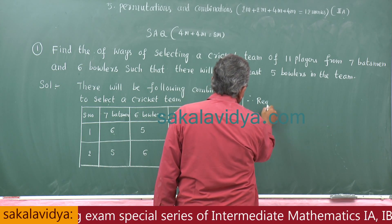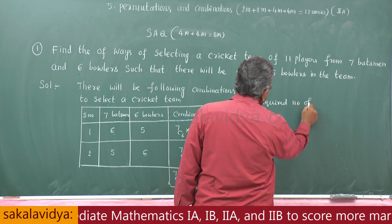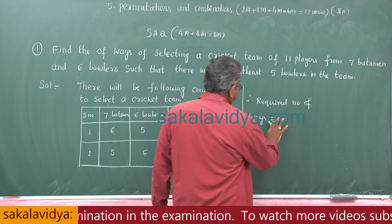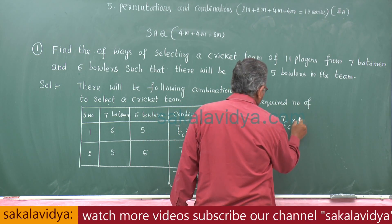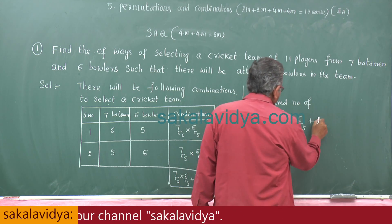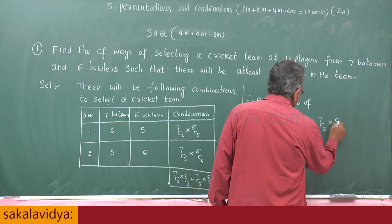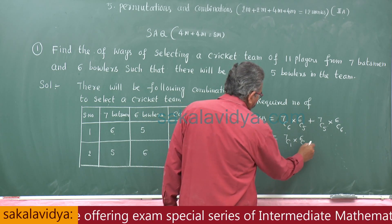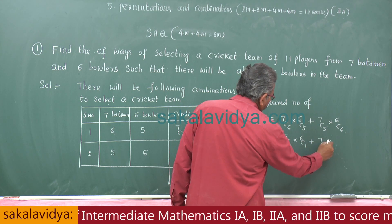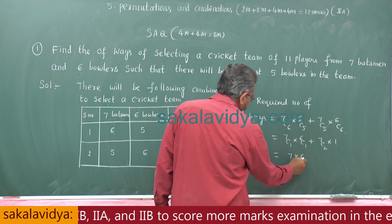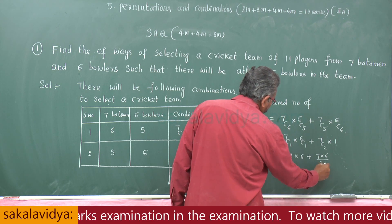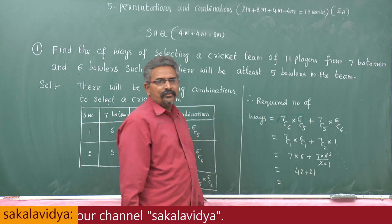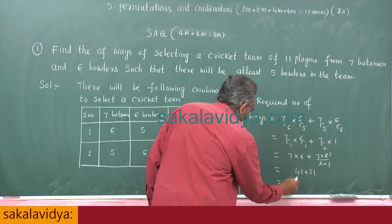Therefore, required number of ways equals 7C6 × 6C5 plus 7C5 × 6C6. Now, 7C6 = 7C1 = 7, 6C5 = 6C1 = 6, 7C5 = 7C2, and 6C6 = 1. This gives 7×6 plus (7×6)/(2×1) = 42 plus 21. So 42 plus 21 equals 63. That is the answer.